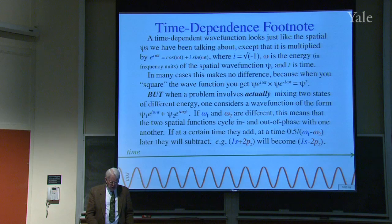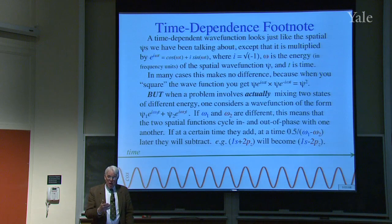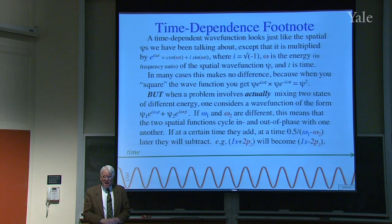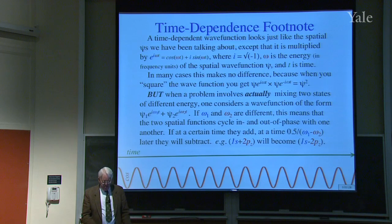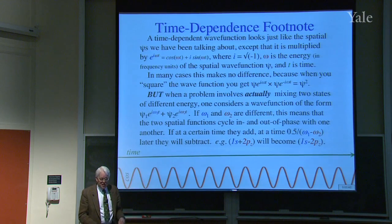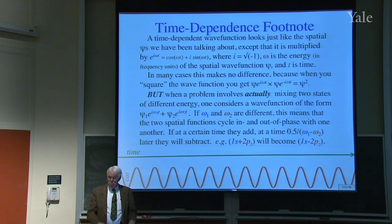When a problem involves mixing two states of different energy, one considers a wave function of the form ψ₁·e^(iω₁t) + ψ₂·e^(iω₂t). If ω₁ and ω₂ are different, the two spatial functions cycle in and out of phase with one another. At a certain time they add; half a period later — half divided by the difference in frequency — they subtract. So 1s + 2pz becomes 1s − 2pz and back.